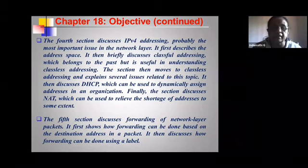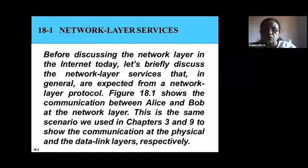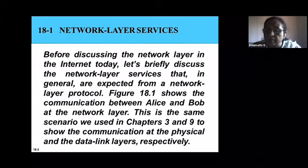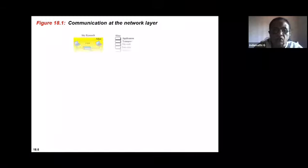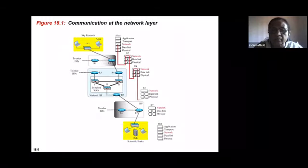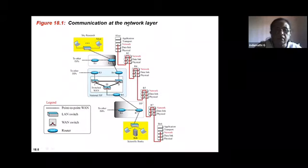The network layer is an important layer in the TCP/IP model because it takes care of host-to-host communication. The same example used when studying the data link layer — which handles hop-to-hop communication — is revisited here, with the addition of the network layer. The diagram shows the Alice machine as the source and the Bob machine as the destination.